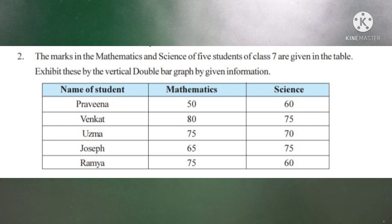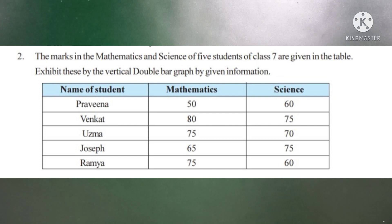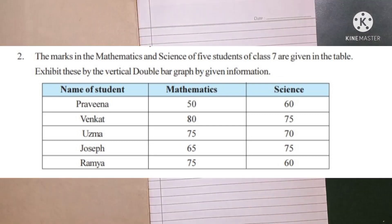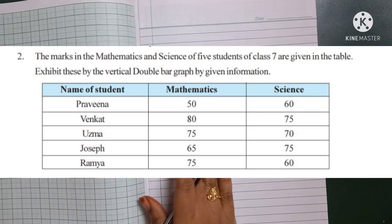The five students are Praveen, Venkat, Uzma, Joseph, and Ramya. Their marks in mathematics and science are given in two columns. To answer this question, we need to draw bar graphs. For this, we need a graph sheet. Let us take one graph sheet.